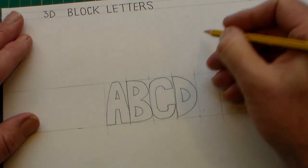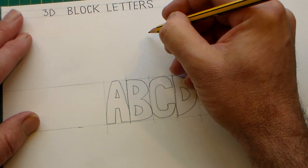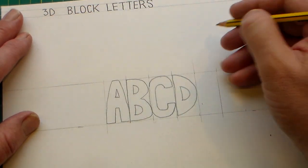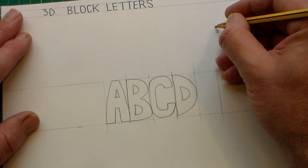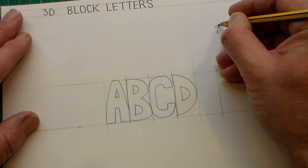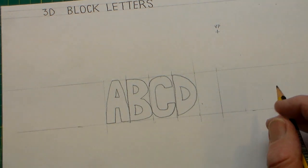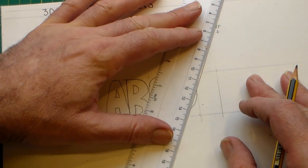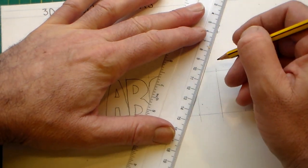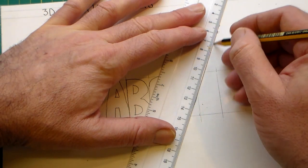Now we're going to pick a point here, somewhere along here, and we're going to just make a point here, an X, and mark it VP for vanishing point. And what we're going to do now is we're going to go from the vanishing point to the edge of each letter.